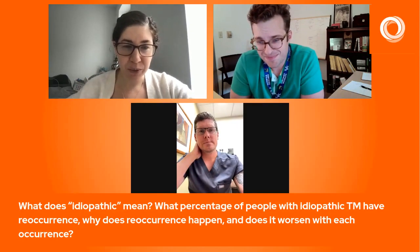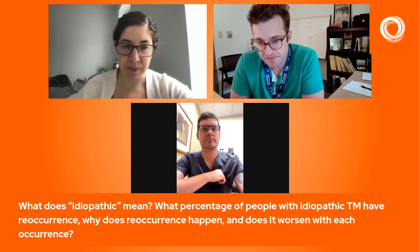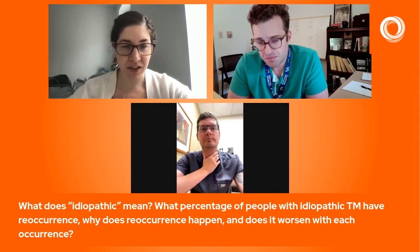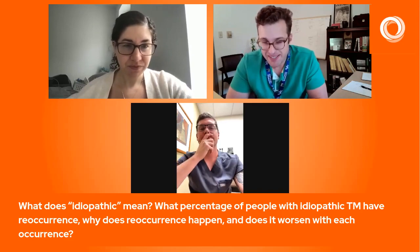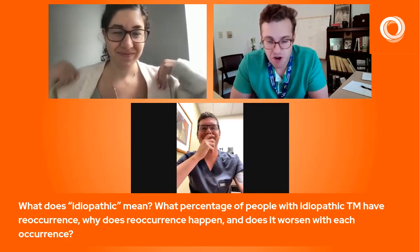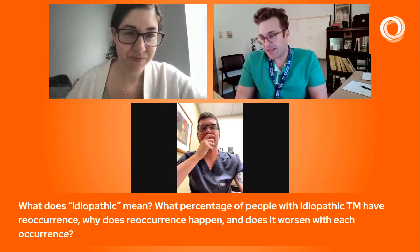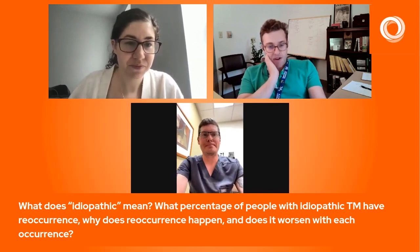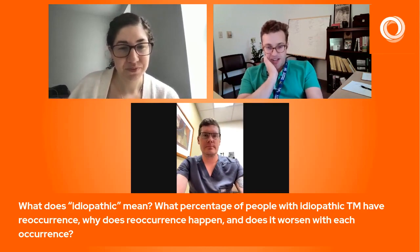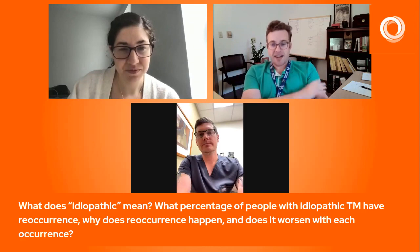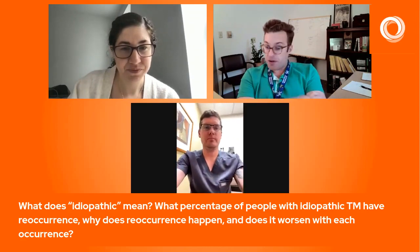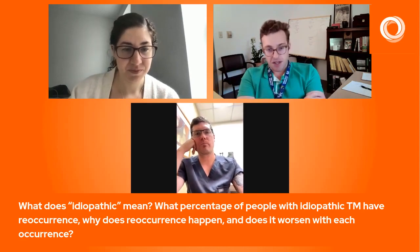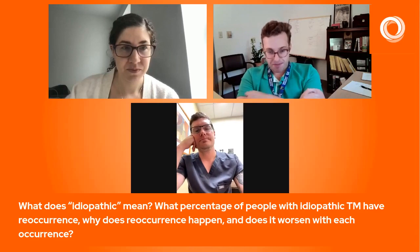Our next question: what does idiopathic mean? The word idiopathic is basically medical jargon — it means a disease that does not have a known cause. When doctors talk about the umbrella of transverse myelitis, diseases like multiple sclerosis and NMO can cause transverse myelitis. We refer to it as idiopathic when we've done all the workup and simply cannot identify the cause — that falls under idiopathic transverse myelitis or idiopathic myelitis, depending on who you ask.